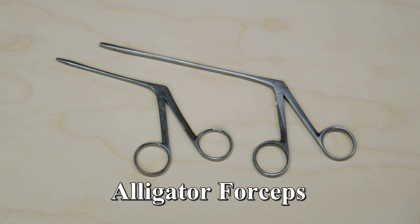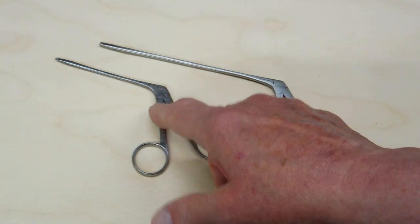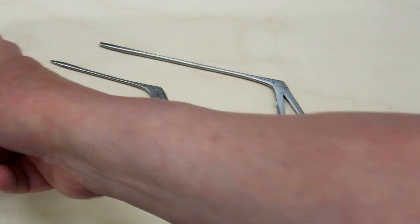These are called alligator forceps. You can find them on eBay. They are in different lengths. This is one of the shorter ones. There's one that's longer than this.